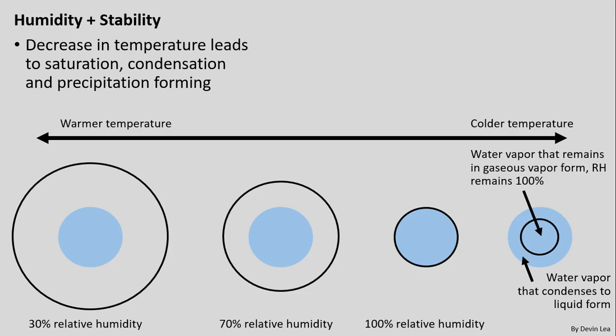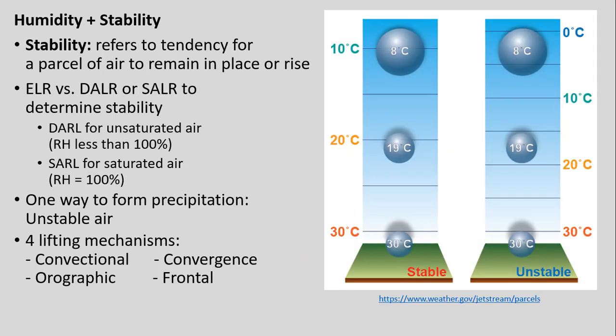Just a quick review: we've already talked about humidity and air stability. We talked about decreasing temperature — for example, with dew point — for our condensation and precipitation. We'll talk more about that. Also, a reminder about air stability, referring to our tendency for an air parcel to remain in place or rise, and the environmental lapse rate of the surrounding air that is not in our air parcel.